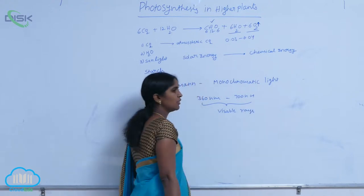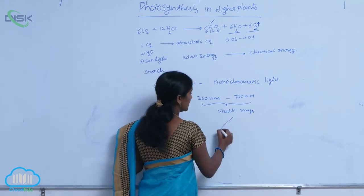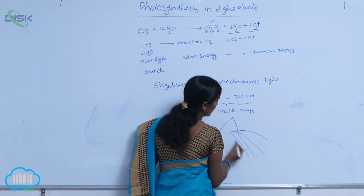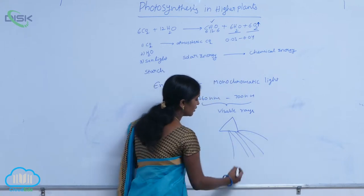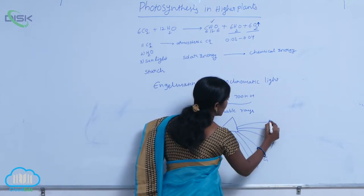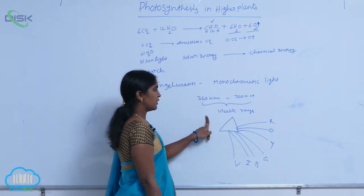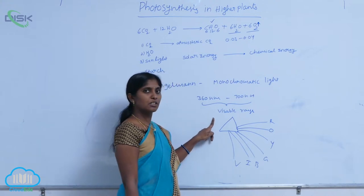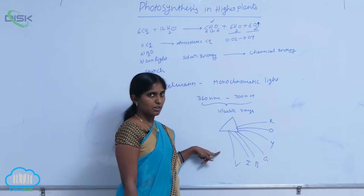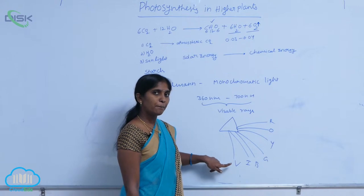These visible rays are convenient for photosynthesis. When these visible rays are passed through a prism, they are spread into monochromatic lights. These are called VIGR — 7 rays produced when the visible rays are passed through the prism, producing monochromatic lights.